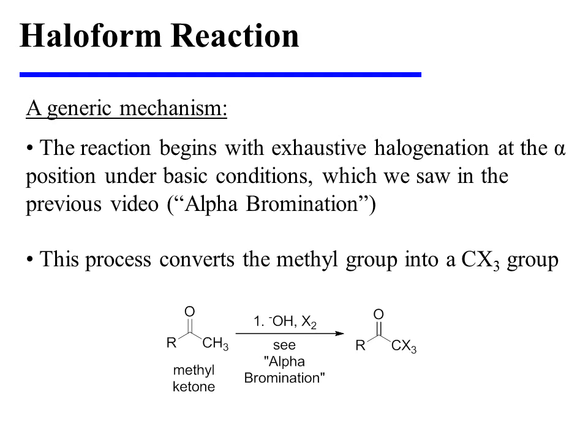The reaction begins with exhaustive halogenation at the alpha position under basic conditions. For a complete mechanism for this step of the reaction, refer to the previous video on alpha-bromination. This process converts the methyl group into a tri-halo methyl group.